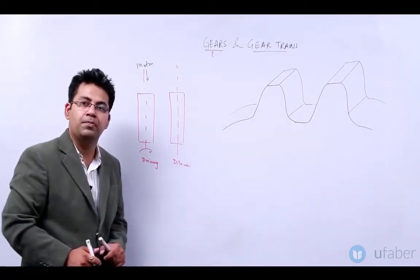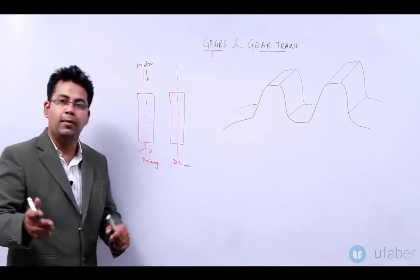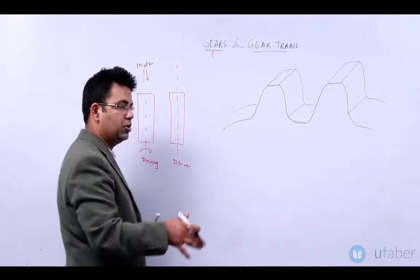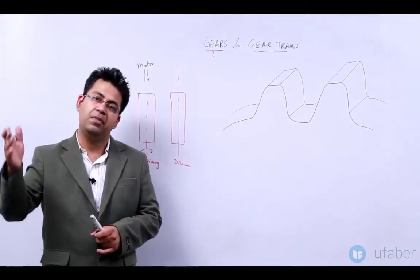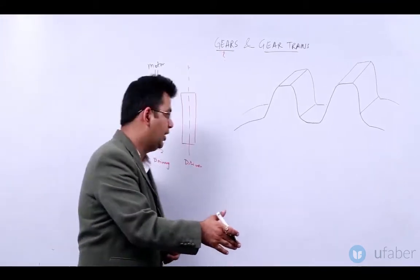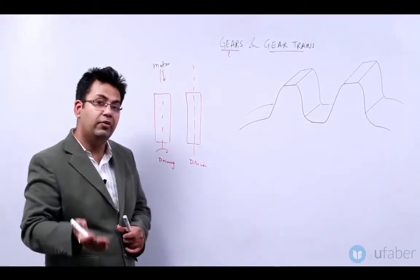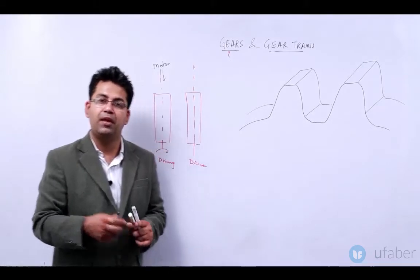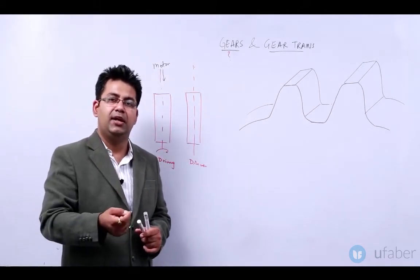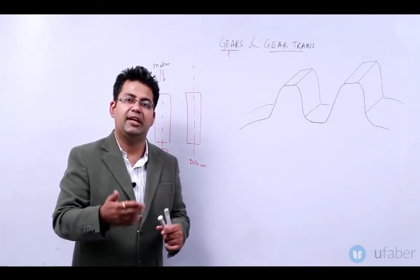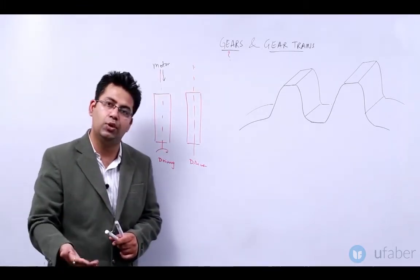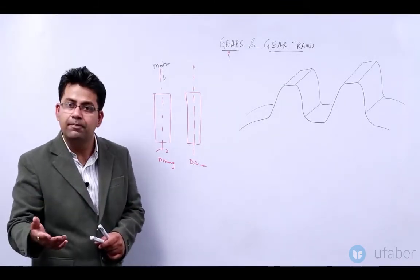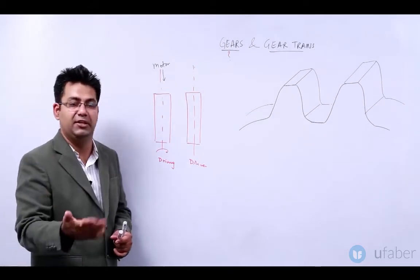Now how do I transmit the power? One way is by putting belts and pulleys. Belts and pulleys also transmit power from one machine element to the other. Similarly I can use gears. Why do we need gears instead of belts and pulleys? Belts and pulleys offer a non-positive drive — there is a lot of slip and the efficiency is low. But in gears you can transmit higher power with higher efficiency and with positive drive. There is no slip.